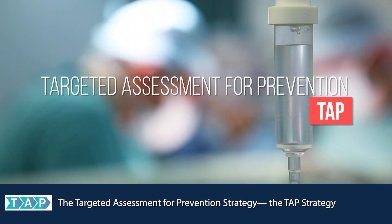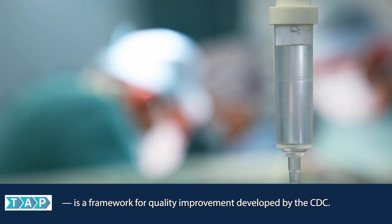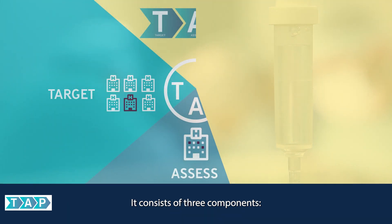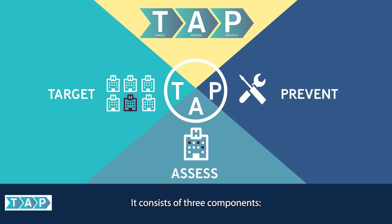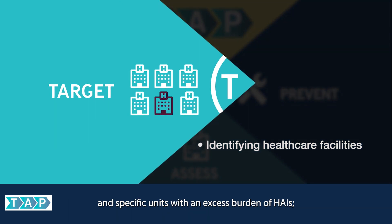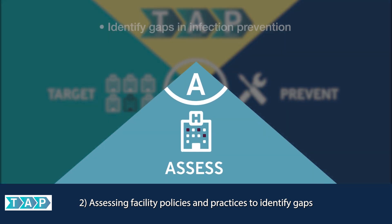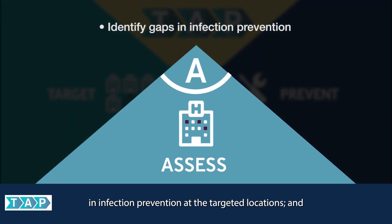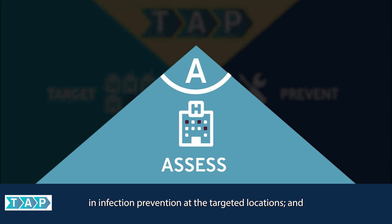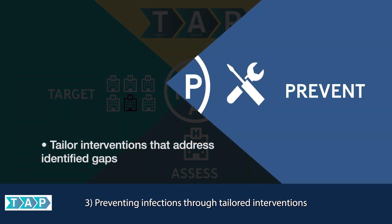The Targeted Assessment for Prevention Strategy, the TAP Strategy, is a framework for quality improvement developed by the CDC. It consists of three components. One, targeting prevention efforts by identifying healthcare facilities and specific units with an excess burden of HAIs. Two, assessing facility policies and practices to identify gaps in infection prevention at the targeted locations. And three, preventing infections through tailored interventions that address identified gaps.